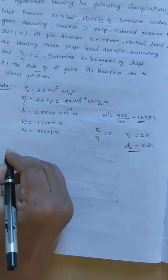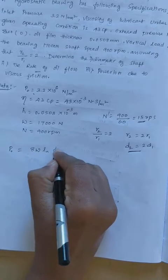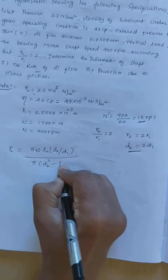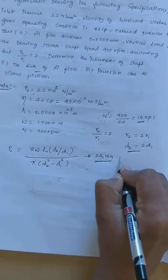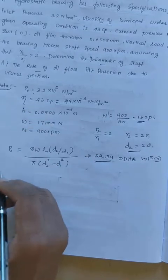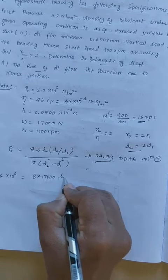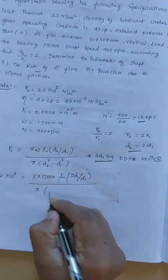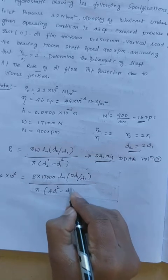To find the shaft diameter, we use the inlet pressure equation (from data handbook, equation 24.139): P₀ = 8W · ln(D2/D1) / [π(D2² − D1²)]. Substituting the values: 3.2 × 10⁶ = 8 × 17,000 × ln(2D1/D1) / [π((2D1)² − D1²)]. Since D2 = 2D1, ln(D2/D1) = ln(2) = 0.6931, giving numerator = 8 × 17,000 × 0.6931 = 94,267.992.